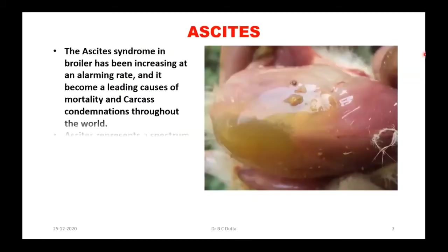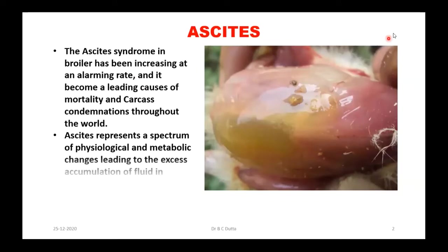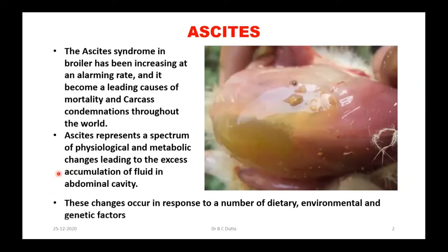What do we mean by ascites? Ascites syndrome in broiler has been increasing alarmingly and it has become a leading cause of mortality and carcass condemnation throughout the world. Ascites represents a spectrum of physiological and metabolic changes leading to excess accumulation of fluid in the abdominal cavity. These changes occur in response to a number of dietary, environmental and genetic factors. This is a typical ascites photograph from my mobile.